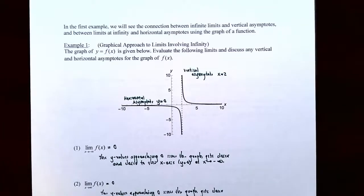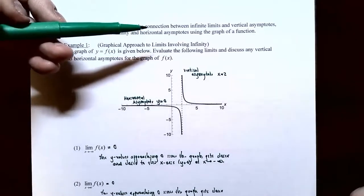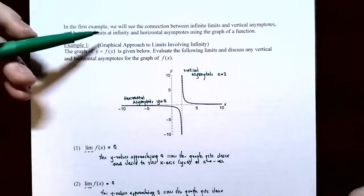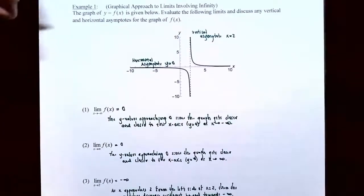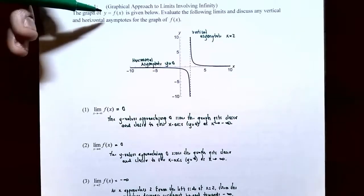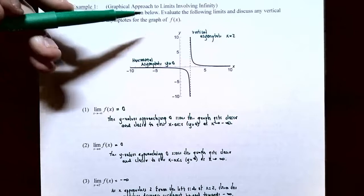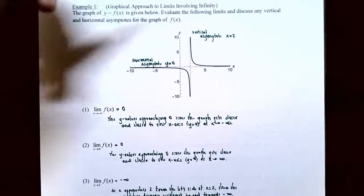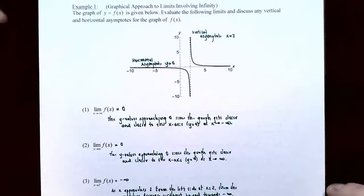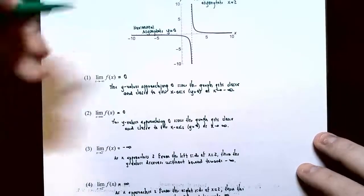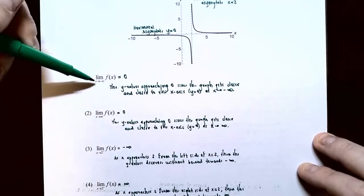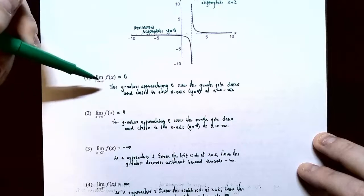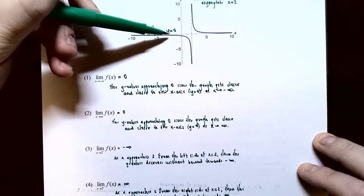Now let's look at an example showing the connection between infinite limits and vertical asymptotes, and limits at infinity and horizontal asymptotes using a graph. Example one: graphical approach to limits involving infinity. The graph of y equals f(x) is given. We'll evaluate the following infinite limits and limits at infinity and discuss any vertical and horizontal asymptotes. First, find the limit as x approaches negative infinity — that's the far left end of the graph.